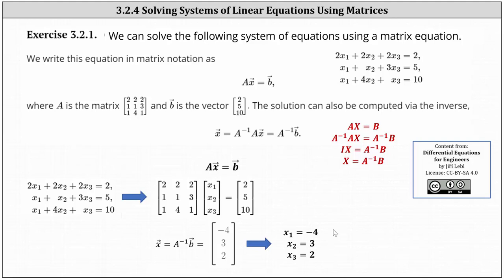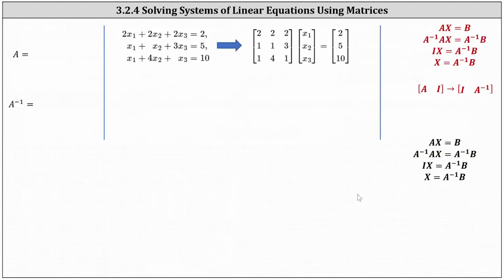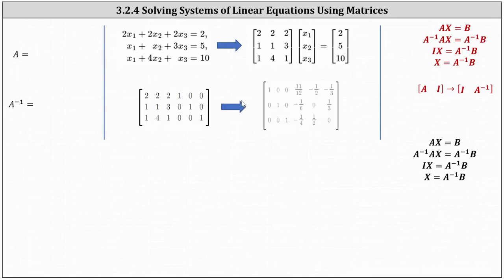Now let's talk about how we would do this by hand. We know to find the solution we need to find A inverse times B, where A inverse is the inverse of the coefficient matrix. If we were doing this by hand, we would set up an augmented matrix where we have the coefficient matrix on the left and the 3 by 3 identity matrix on the right. Then we perform row operations so that we have the identity matrix on the left, and whatever 3 by 3 matrix is on the right is A inverse.